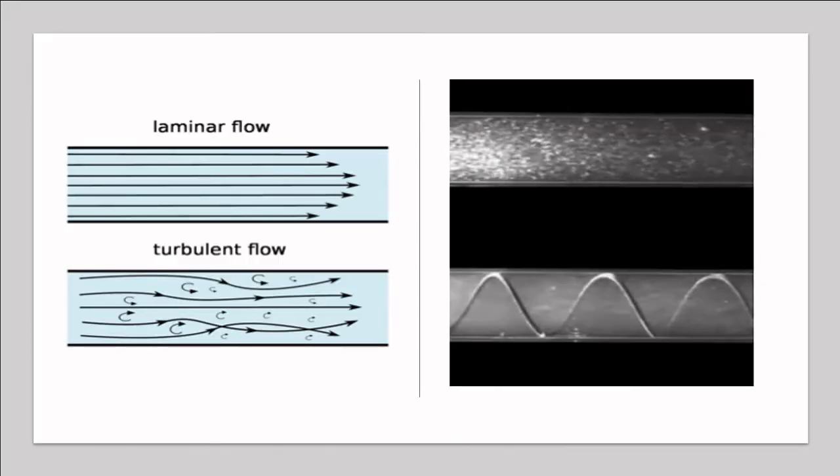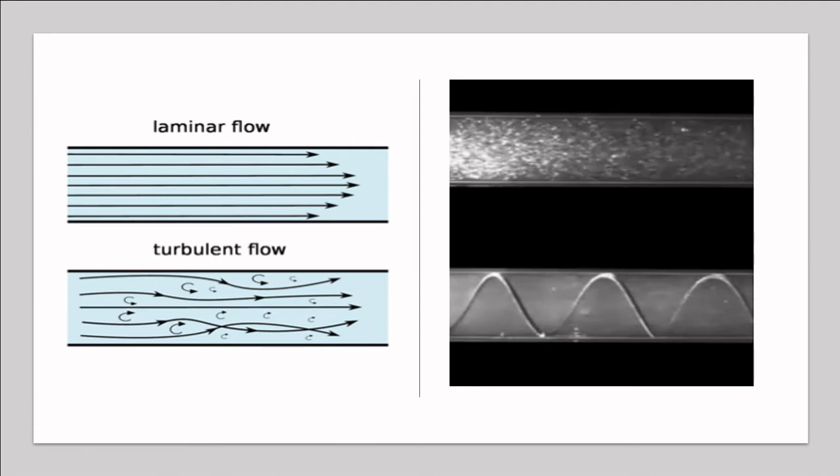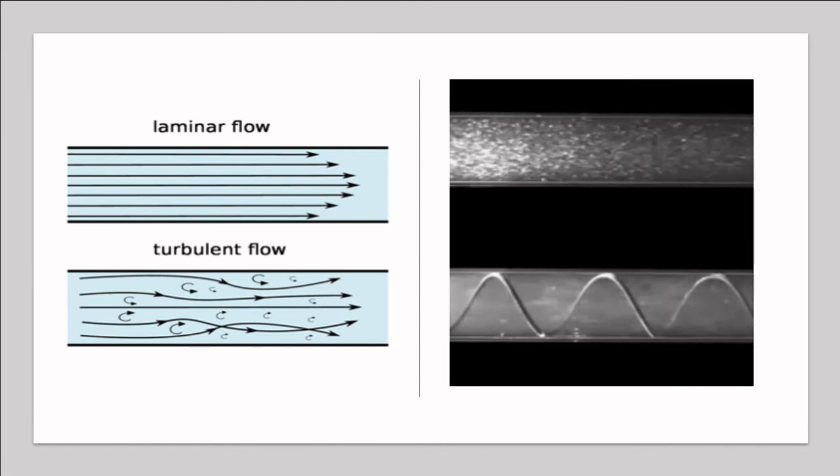In fluid dynamics, flow can be characterized by how the fluid is moving with laminar, turbulent, or transitional flow. Laminar flow, as shown on top, is smooth and orderly and classified with a Reynolds number less than 2,300. Turbulent flow, on the bottom, is rough and chaotic with a Reynolds number above 4,000. And transitional flow is a combination of laminar and turbulent flow with a Reynolds number in between 2,300 and 4,000.